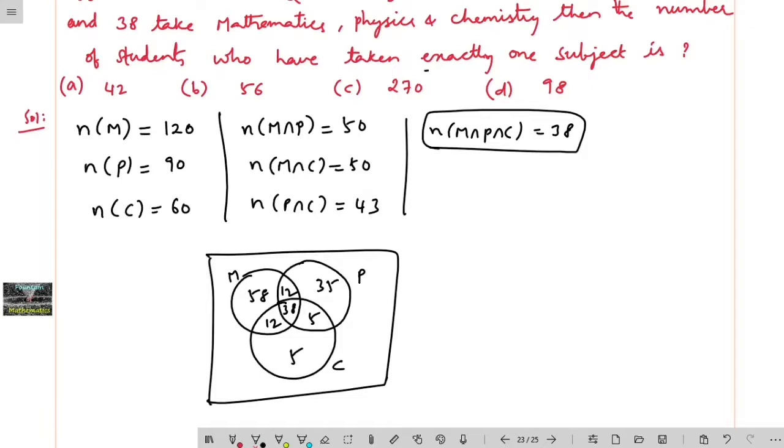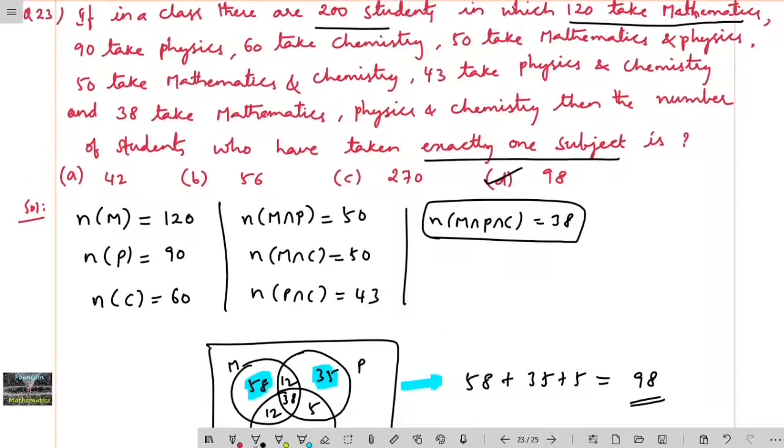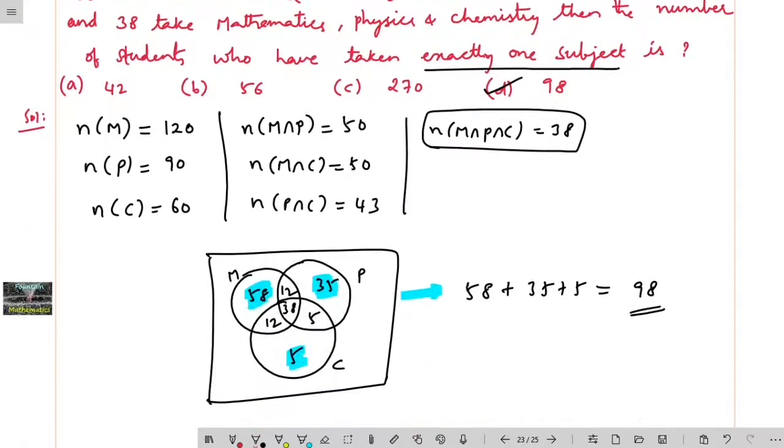So according to the question, who have taken exactly one subject - exactly one subject means here it will be 58 plus 35 plus 5, so it is 98. So 98 is the right answer for this question. By using Venn diagram you can give the answer very quickly, right? Let me show you double right.